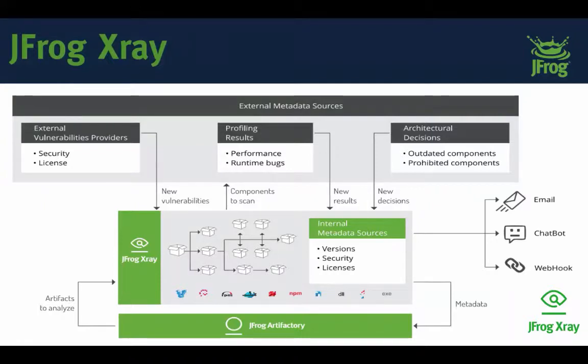Let me show you how X-Ray works. Regardless of package type — whether a simple JAR file or a complex Docker image with multiple layers and multi-tiered components — X-Ray tears apart each layer to its sub-layers and sub-components all the way to the bottom. It then scans those components individually. A Docker image with hundreds of components is scanned as hundreds of different components, not as one artifact. This allows X-Ray to create component graphs for each component, which keep updating as new relationships or metadata changes occur.